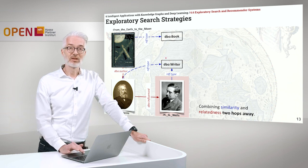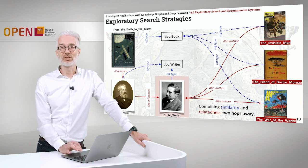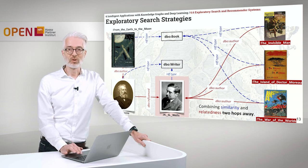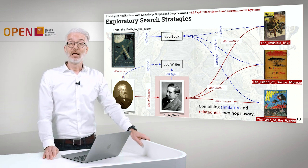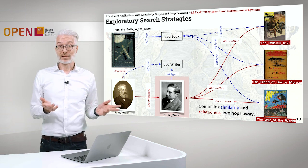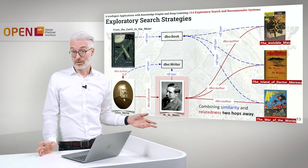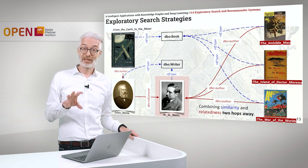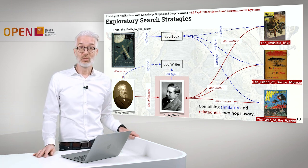Going one step further from Jules Verne, you might end up with somebody who was influenced by Jules Verne — that is H.G. Wells. He is also a writer, just like Jules Verne, so we have similarity and relatedness combined again. Then for the recommendation, the subject should also be a book — so which books are associated with this author? We get books authored by H.G. Wells like 'The Invisible Man,' 'The Island of Dr. Moreau,' or 'The War of the Worlds,' which might then be of interest to you.